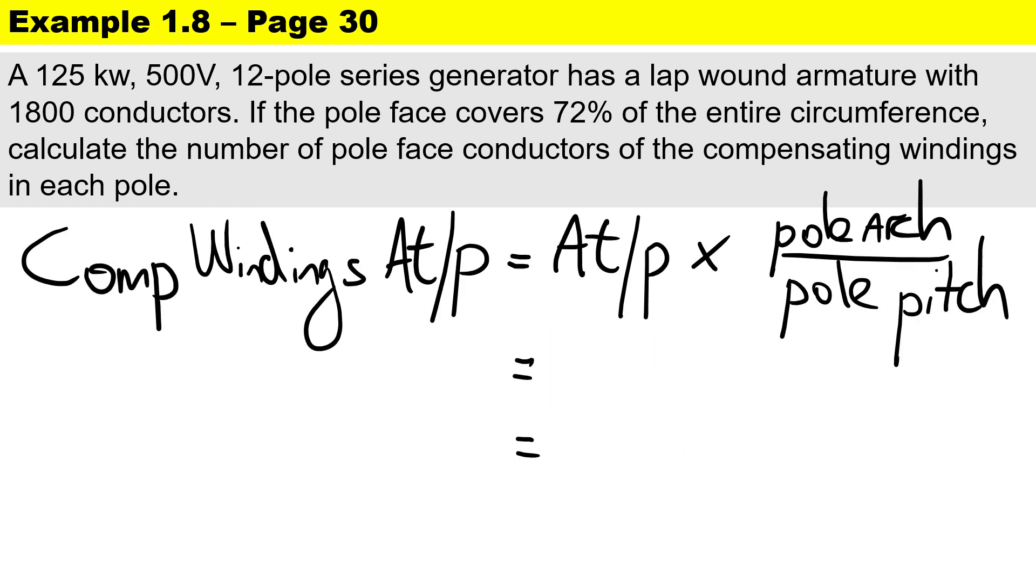Next, to calculate the compensating winding ampere turns per pole: it's the armature ampere turns per pole multiplied by the pole arc and pole pitch ratio. We already calculated the armature ampere turns per pole as 1562.5, multiplied by the ratio of 0.72 because it covers 72% of the circumference of the pole face. The answer is 1125 ampere turns per pole.